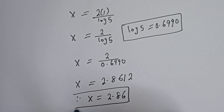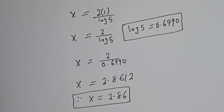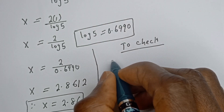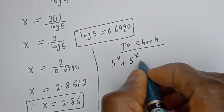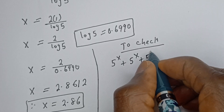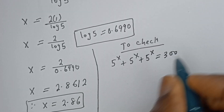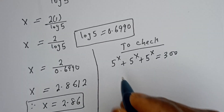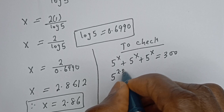This is the final answer. You can check to confirm if this answer is right or wrong. Let's check: we have the given equation 5 to the power of s plus 5 to the power of s plus 5 to the power of s is equal to 300. When s is equal to 2.86, we have 5 to the power of 2.86.